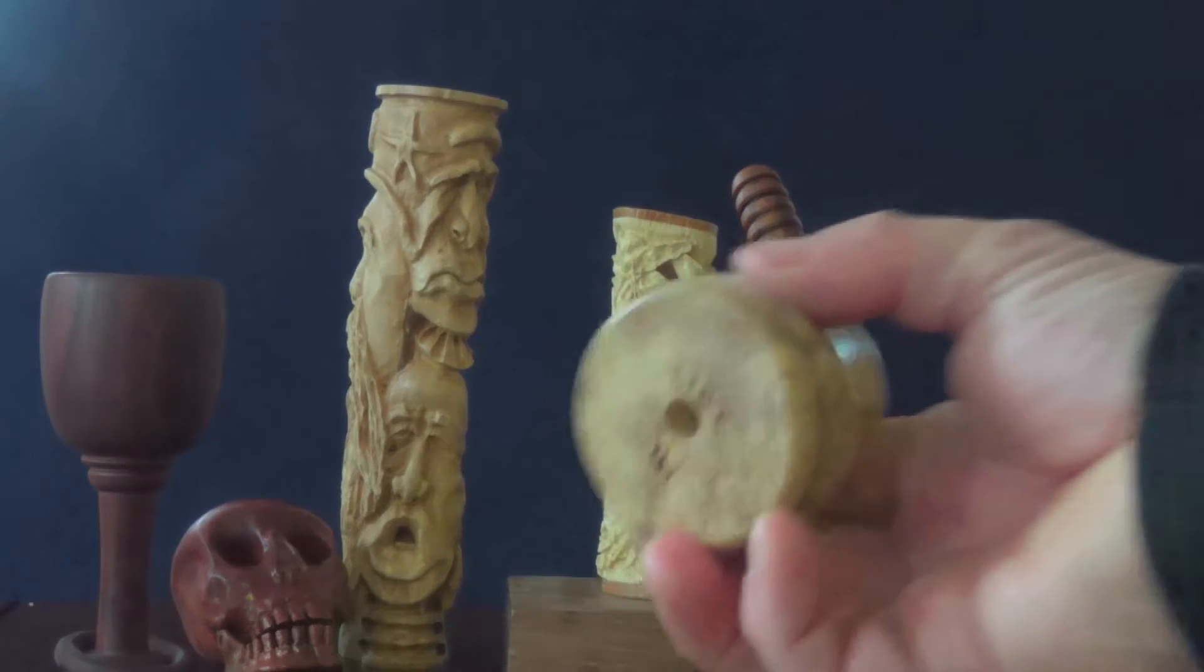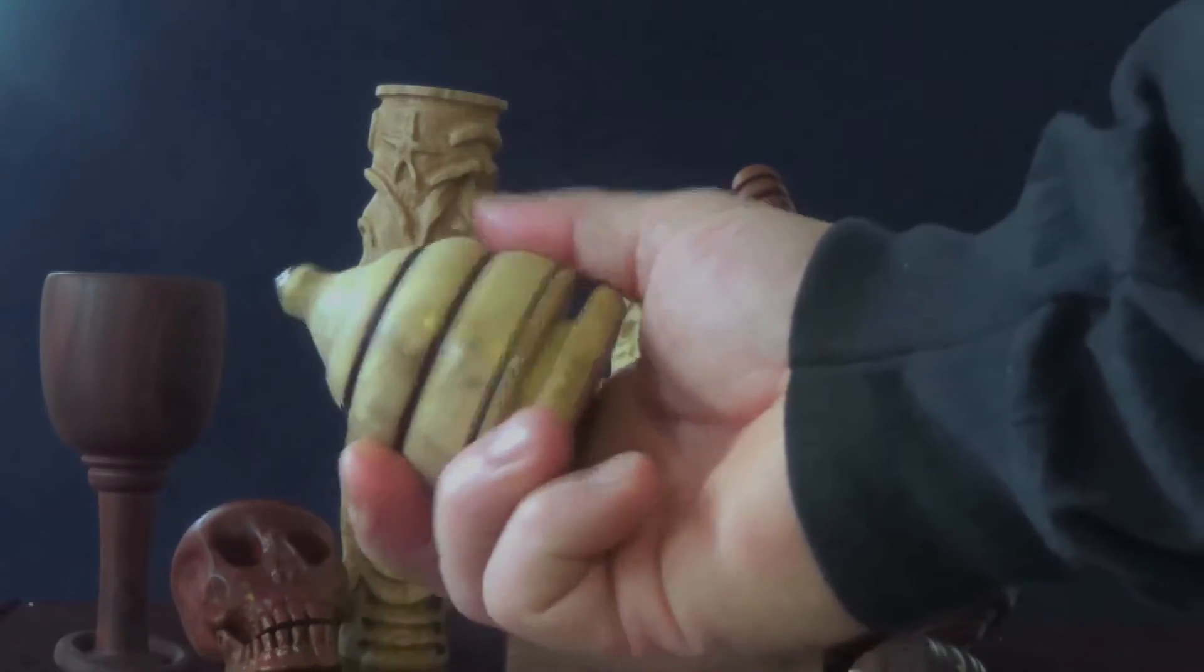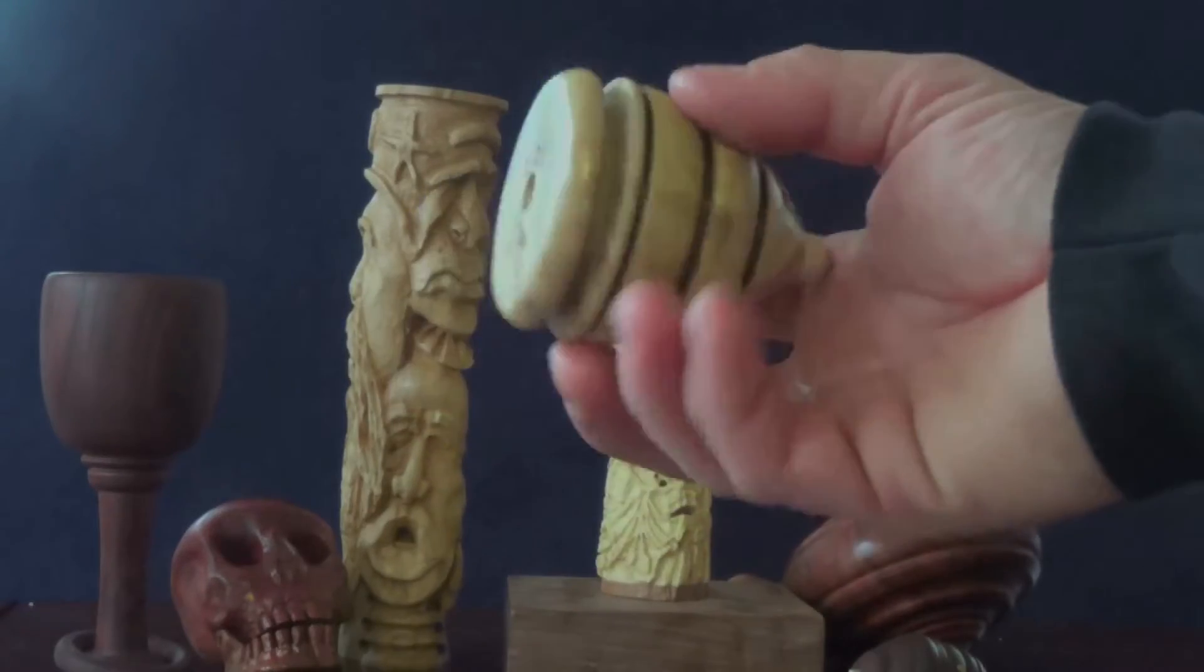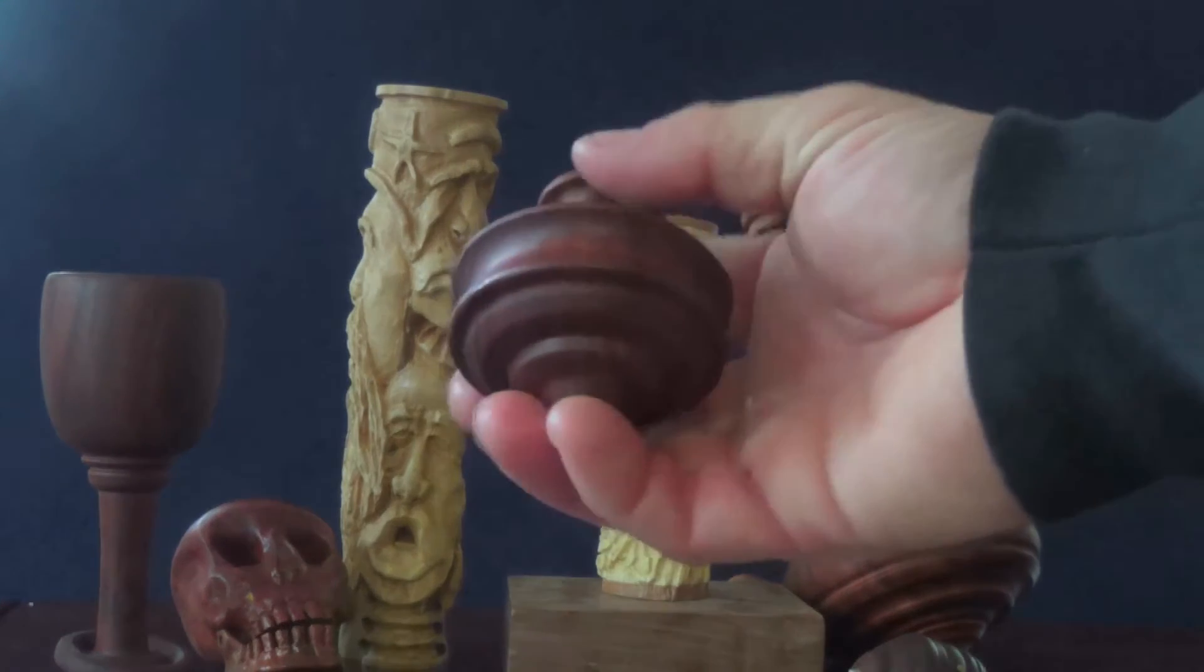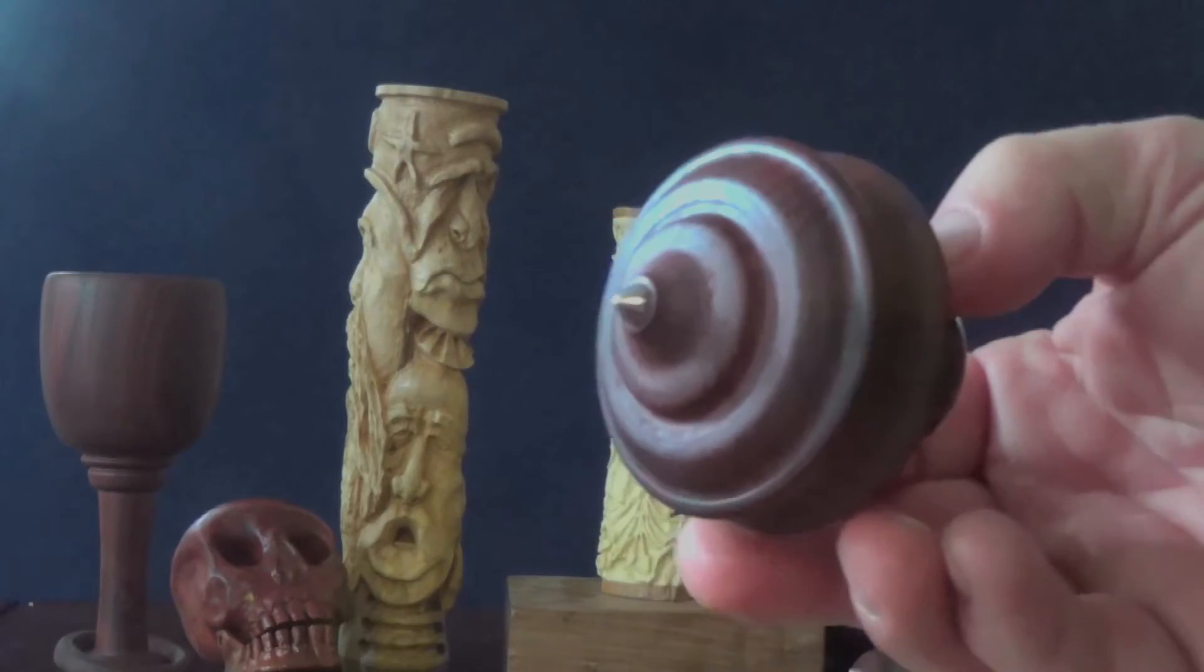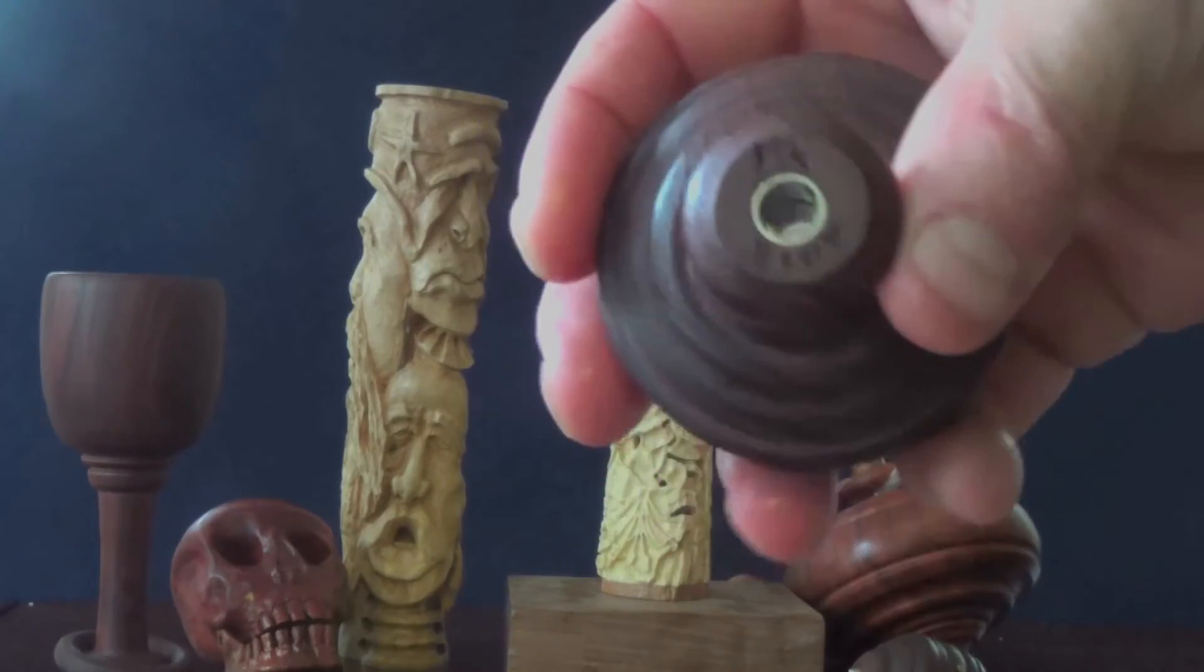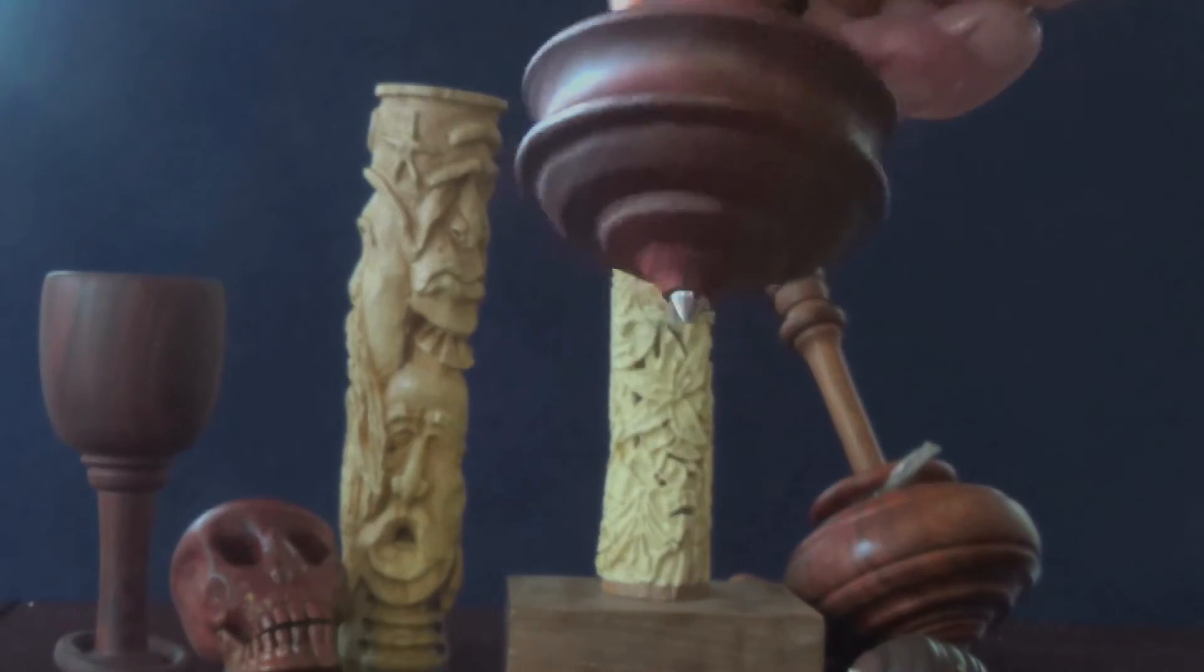So I have several other tops. This one's out of some spalted, or rotten, started to rot wood from across our creek. It spins real nice. And then there's some other ones. This one I actually made out of redwood, and I was able to put a steel tip in it and polished it. It actually goes all the way through. You can see the metal down inside.